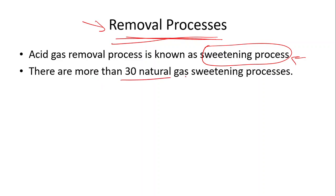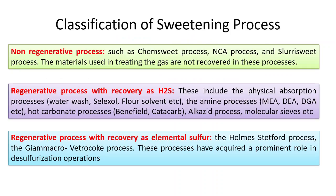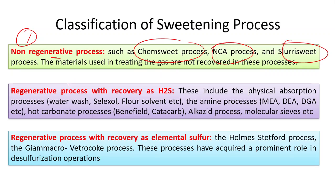There are more than 30 natural gas sweetening processes available, depending on different criteria and functions. Looking at the classification of these processes, we can categorize them in three ways. Number one is the non-regenerative process, where the solvent cannot be regenerated — examples include the Chem Sweet process, NCA process, and Slurried Sweet process. In these processes, the materials used in treating the gas are not recovered, so large amounts of material are required.